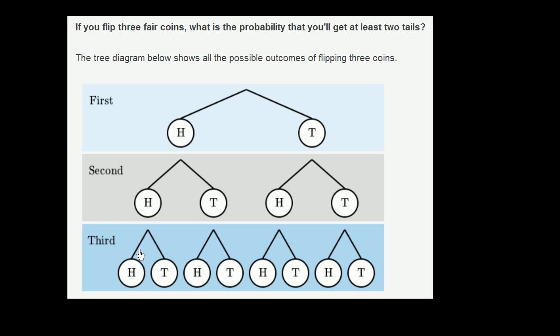And then for each of those outcomes, it shows us the different outcomes for the third coin. So let's think about how we represent getting at least two tails. What are the total outcomes, and which of those meet our constraints of getting at least two tails?